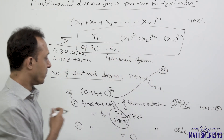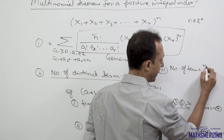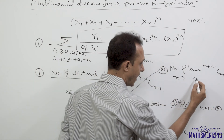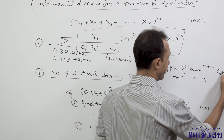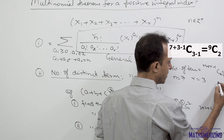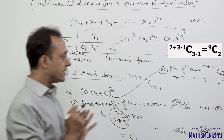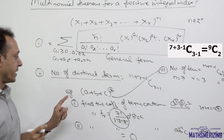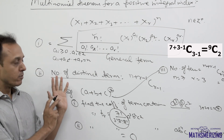The third question asks: find the number of terms in the expansion. The number of terms is given by (n + r − 1) C (r − 1). Here n is 7, and r is 3 since there are three separate variables a, b, and c. So the number of terms is (7 + 3 − 1) C (3 − 1), which is 9C2, equal to 36 distinct terms in the expansion of (a + b + c) to the power 7.